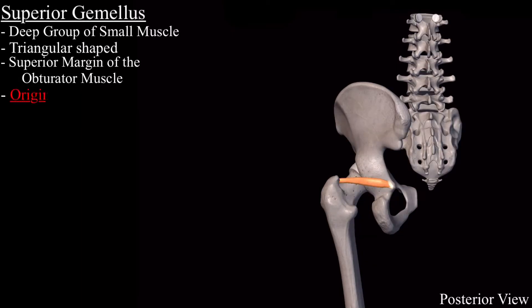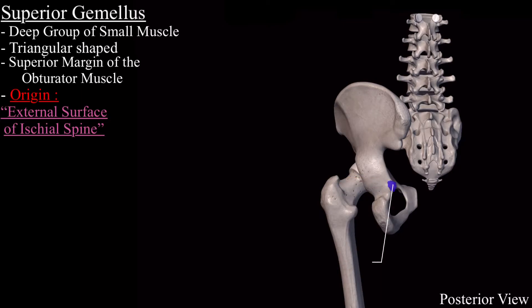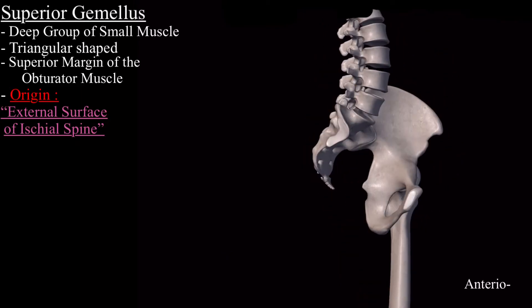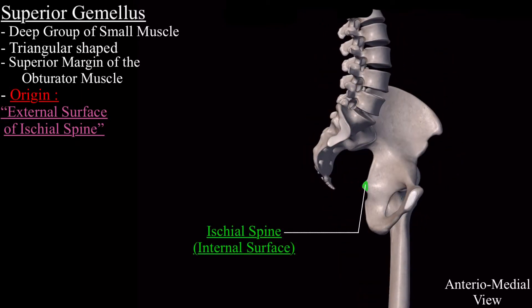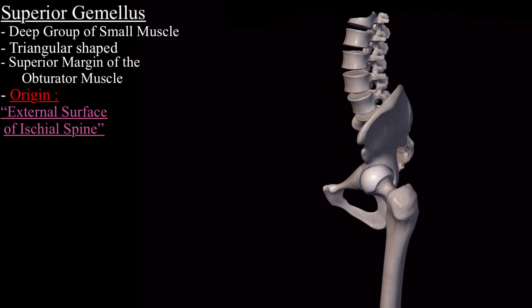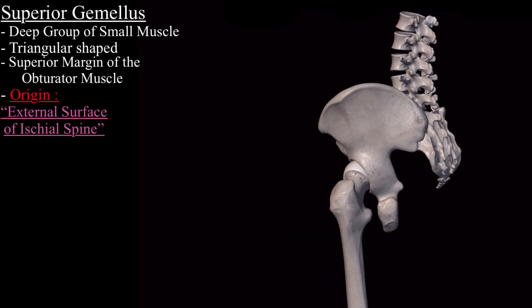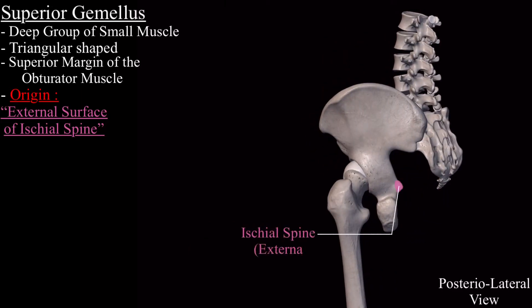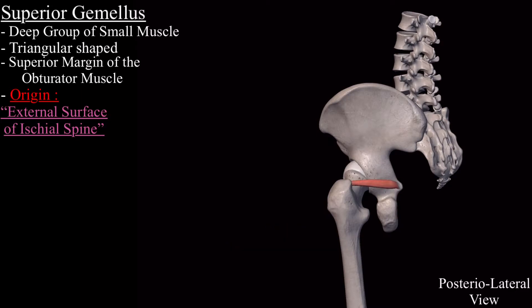It originates from the external surface of the ischial spine. In the posterior view of the skeleton, this is the ischial spine. In the intermedial view, this is the internal surface of the ischial spine, while in the posterior lateral view, this is the external surface of the ischial spine, and from here the superior gemellus muscle originates.